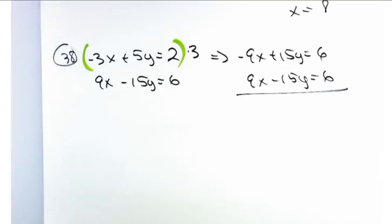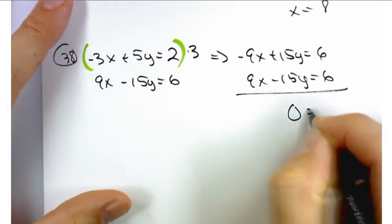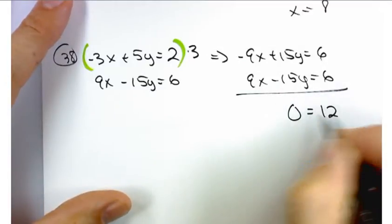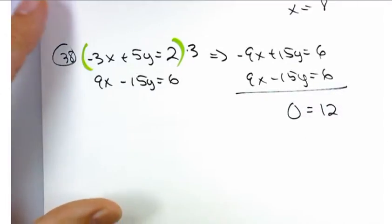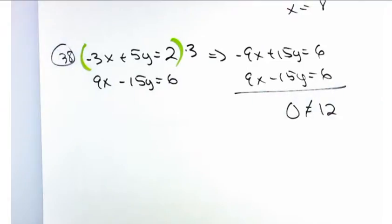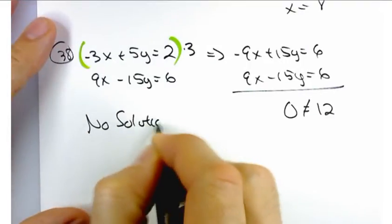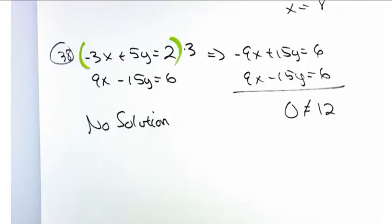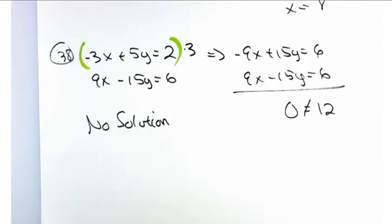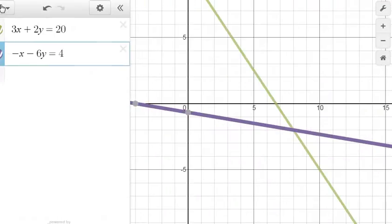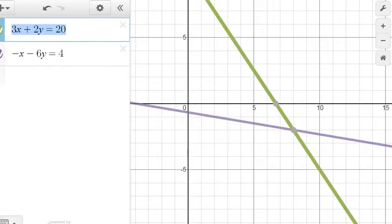What do I get when I add those two together? 0 equals 12. Does 0 equal 12? No. What's going wrong here? No solution. There's no solution, but why? They're the same slope and they're the same line. Perfect. These two lines are parallel. They have the same slope, but different y-intercepts. So, if you were to graph them, you should see that they're parallel.